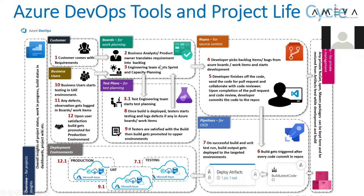The developer picks work items from the Azure Boards and starts working on them. Once delivered, he commits the changes into the Git repository. He writes code using Visual Studio — a Microsoft certified IDE. Visual Studio is an integrated development environment, similar to Eclipse or IntelliJ, but more user-friendly for building both front-end and back-end code. Once the developer finishes, he commits changes into the Git repository.